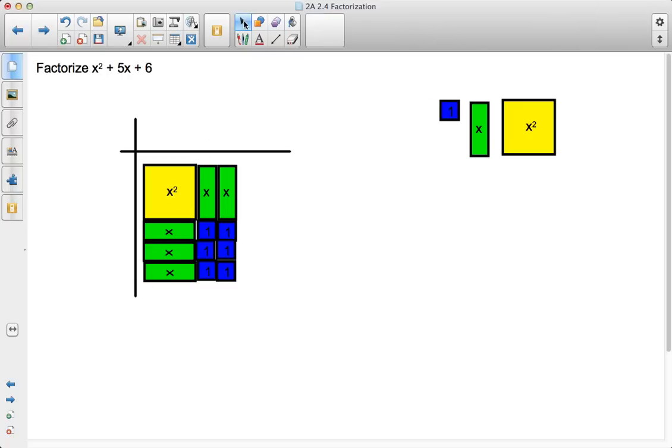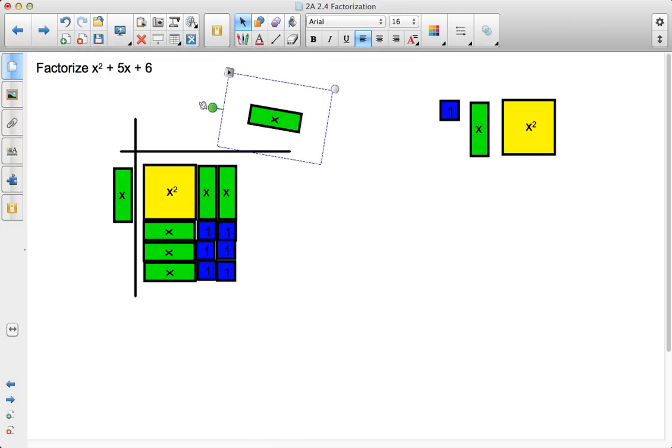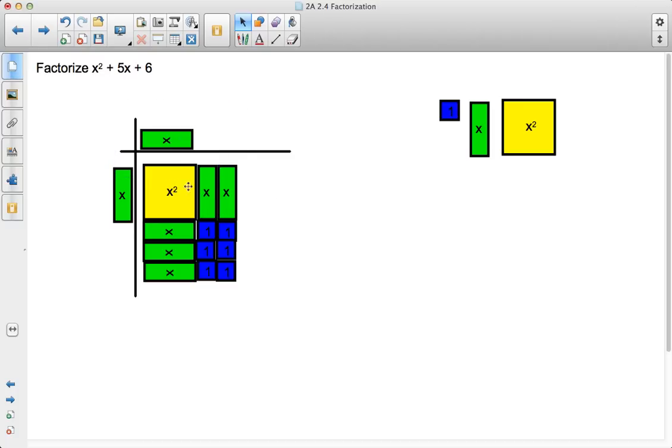Now what I'm going to go ahead and do now is factor x² + 5x + 6 with these tiles. And I can see, in order to get x², I need to have x times x. And in order to get an x, I already have x, so I need an x times 1 will get me x over here. X times 1 gets me x.